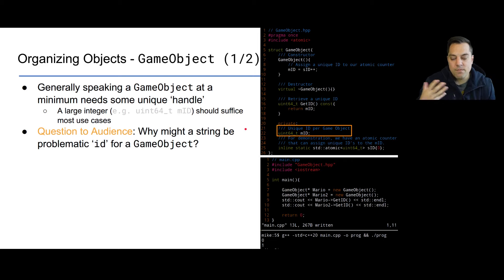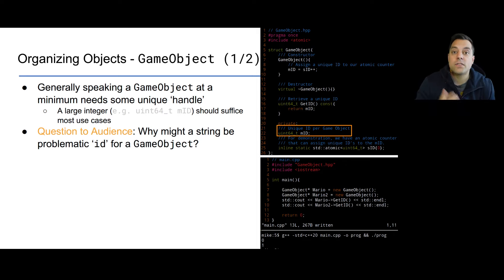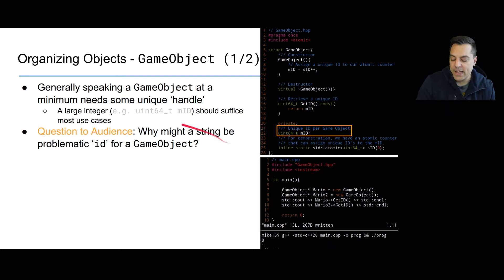At a minimum we want to be able to identify different objects in a gaming context. We need to differentiate between Mario, the bad guys, the background tiles, the clouds, etc. Those are all separate entities or game objects, so typically you need some unique ID per game object. I've decided to use an unsigned integer with 8 bytes or 64 bits, giving us plenty of game objects. Why might a string be a problematic ID for a game object? Pause and think about that.